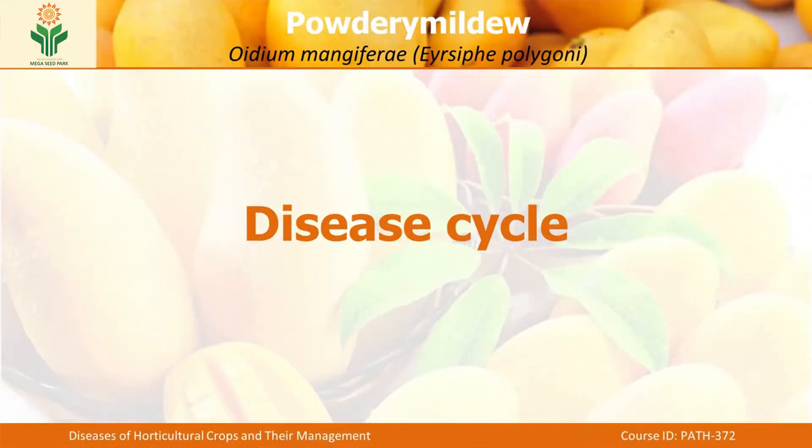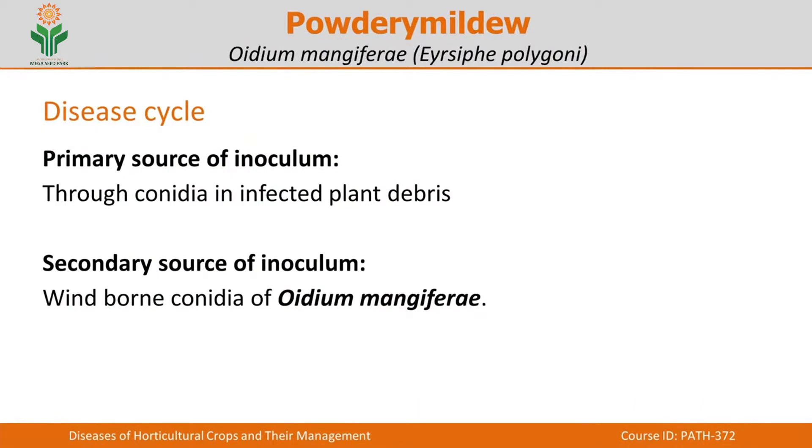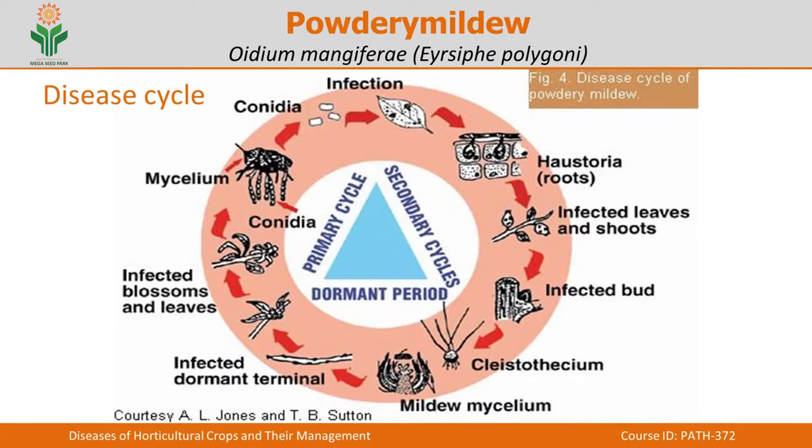The disease cycle is very important — we need to understand how the pathogen completes its life cycle in the host, and what the primary and secondary sources of inoculum are. Conidia in infected plant debris serve as the primary inoculum. The airborne conidia of Oidium mangiferae move from plant to plant and serve as the source for secondary spread of the pathogen.